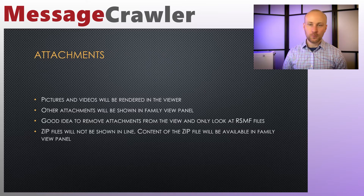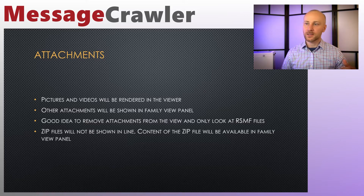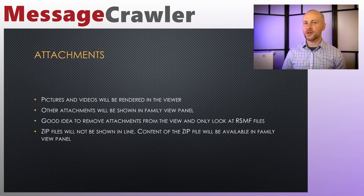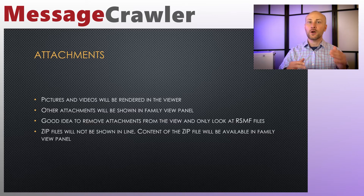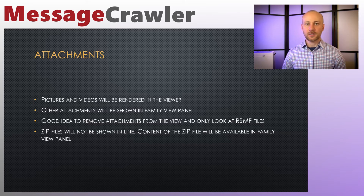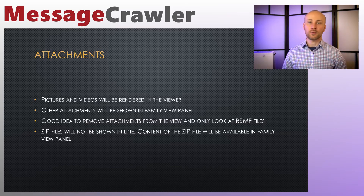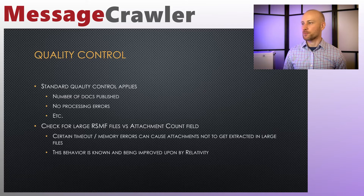Attachments: pictures and videos will be rendered in the viewer inline. Other attachments will show up in the family panel on the bottom right. In the table view, it's a good idea to filter only for messages — only for RSMF files — and remove attachments from the view, so when you go next, next, next you're going from one RSMF file to the next without seeing attachments. If you have zip files, the zip file content will not be shown inline; it will be extracted and shown in the family panel on the bottom right.